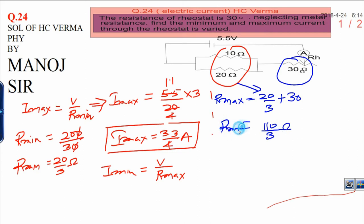Now, in order to get the minimum current, I minimum will be V is 5.5 divided by 110 over 3. You see here.